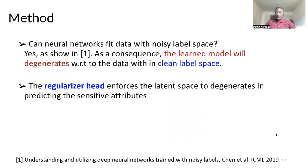A question that may occur is: can neural networks fit data with noisy label space? The answer is yes. It's shown in this work and other works that neural networks can fit data with partially noisy or completely noisy labels. That's what we leverage here to achieve our goal. As a consequence, if we train a neural network on this noisy label space, what happens is that the learned model degenerates, and it will never generalize well on clean label space. Our regularizer head here enforces the degeneration of predicting the sensitive attribute from the learned representation.